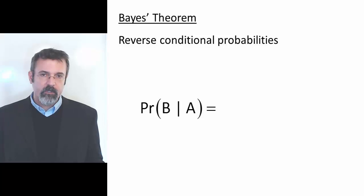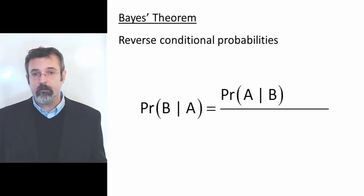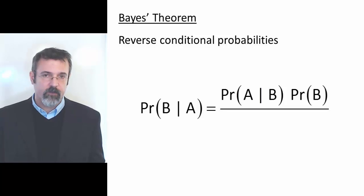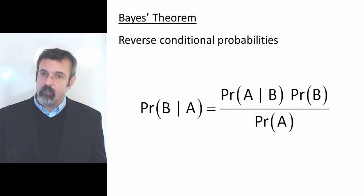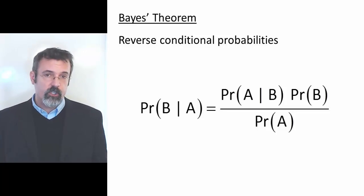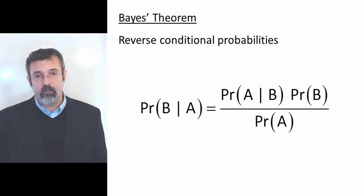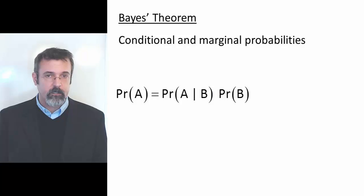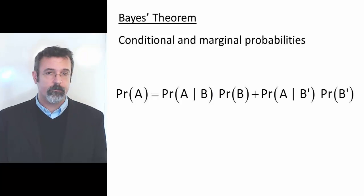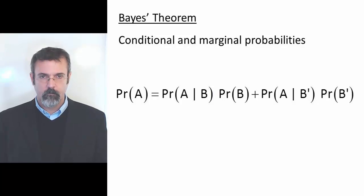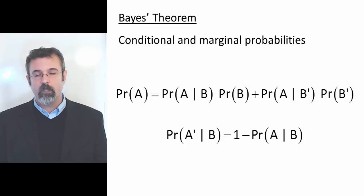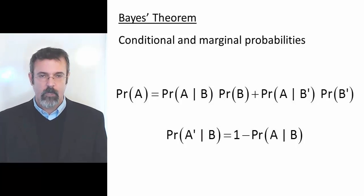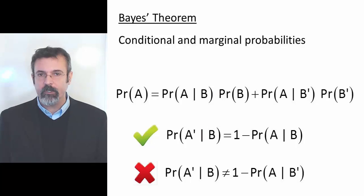Bayes' Theorem says the probability of B given A is the probability of A given B multiplied by the probability of B, divided by the probability of A. Two other formulas often used along with Bayes' Theorem show the relationship between conditional and marginal probabilities. The first tells us that the probability of event A is the probability of A given B times the probability of B, plus the probability of A given NOT B times the probability of NOT B. Finally, the probability of NOT A given B is 1 minus the probability of A given B. Beware: the probability of NOT A given B is NOT equal to 1 minus the probability of A given NOT B.